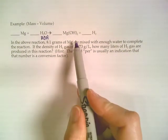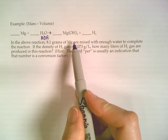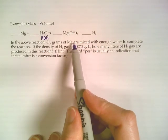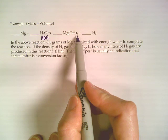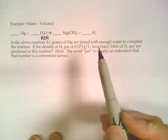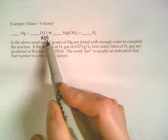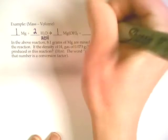So we just have to balance this. Overall, because we have two OHs and two Hs on the right but only one H and one OH on the left, we need a two there and now it's balanced.